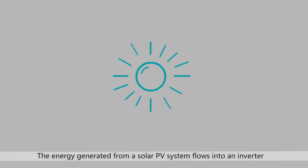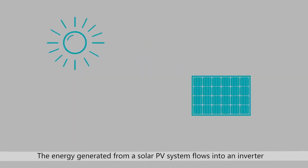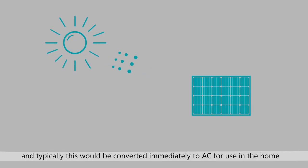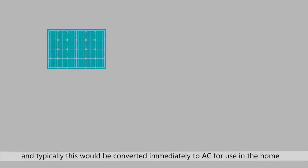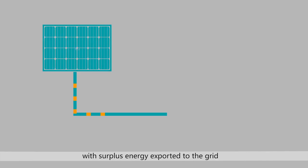The energy generated from a solar PV system flows into an inverter and typically this would be converted immediately to AC for use in the home, with surplus energy exported to the grid.